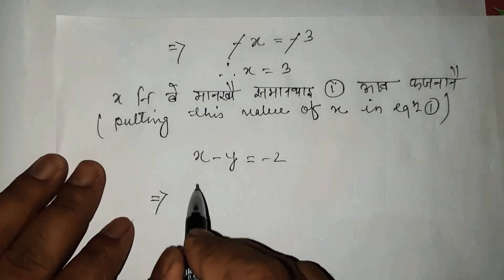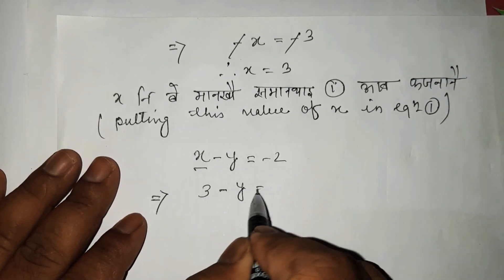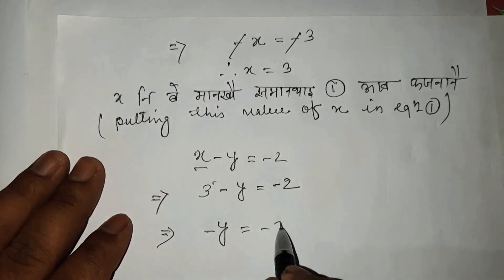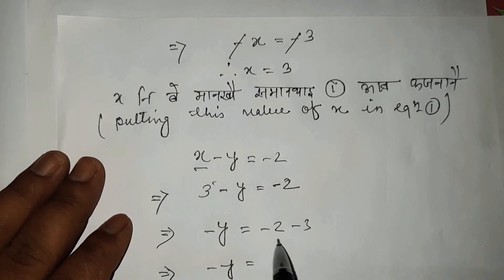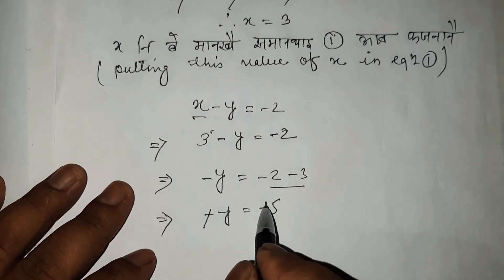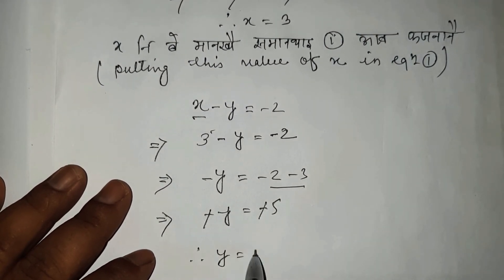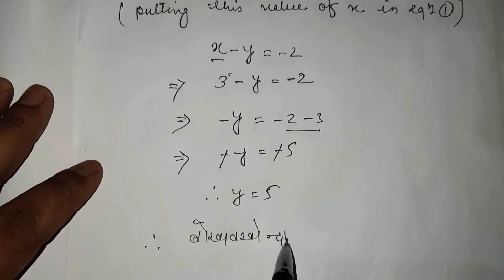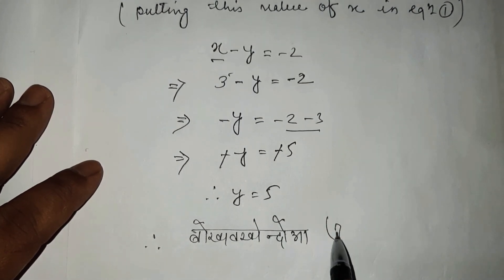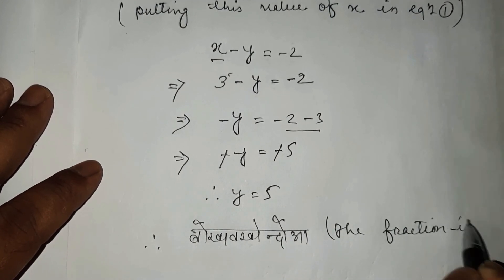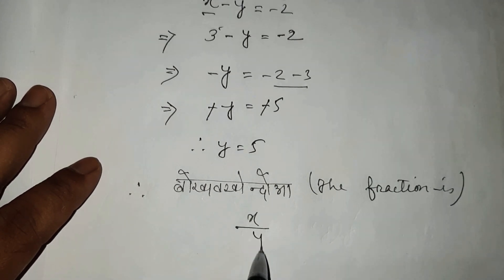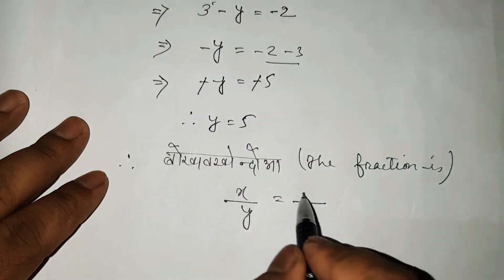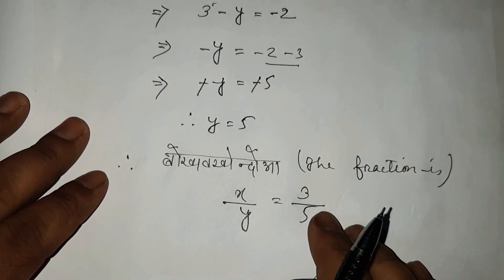We have to write x in equation number 1. The fraction x by y, where x equals 3 and y equals 5 — so the fraction is 3 by 5, and this is 3 by 5.